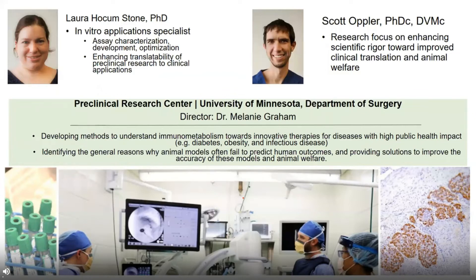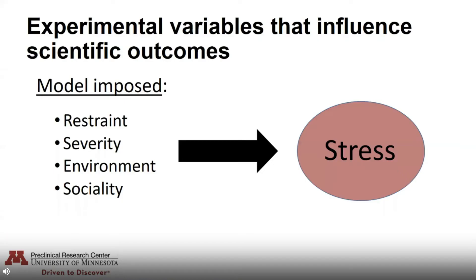Next, I'd like to talk about model-imposed variables that can impact cytokine expression, and for that I'll hand it over to my colleague Scott. Thanks, Laura. Hi everyone, my name is Scott Oppler and I'm a current graduate student at the University of Minnesota's College of Veterinary Medicine, where my research focuses on enhancing scientific rigor towards improved clinical translation and animal welfare. In addition to intrinsic factors, there are a range of model-imposed variables that can unintentionally influence important scientific outcome measures. Characteristics of the lab setting — such as how animals are handled and the severity of their physical and social environments — may expose animals to conditions different from the clinical setting, and these variables can have downstream effects on an animal's stress state, which has been shown to have profound influences on a number of physiological systems.